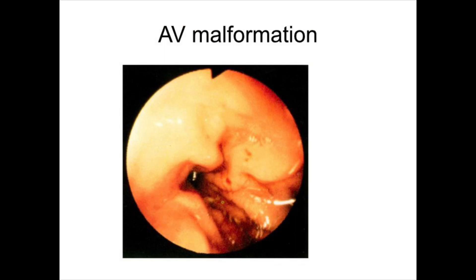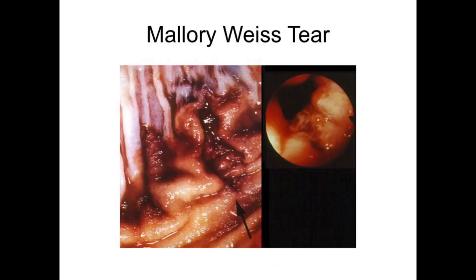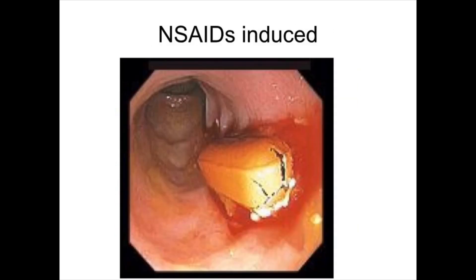Arteriovenous malformations are also seen — as shown by the red dot at about the 3 o'clock position in the centre — and these are vascular causes. Mallory-Weiss tear is commonly seen at the gastroesophageal junction and is preceded by retching or profuse vomiting; it carries a classical history and can be identified endoscopically. Medicine-induced upper GI bleed can look like ulcerations and can be incredibly difficult to attribute to NSAIDs without a careful drug history.